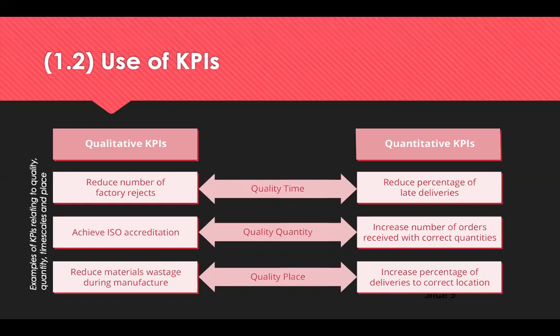KPIs can relate to quality, time, quantities and place — linking back to the five rights. They should be included in contracts so they form part of the agreement, and performance can be monitored and compared to KPIs to assess if a supplier is meeting them. These KPIs can be either qualitative or quantitative, but they must be measurable.